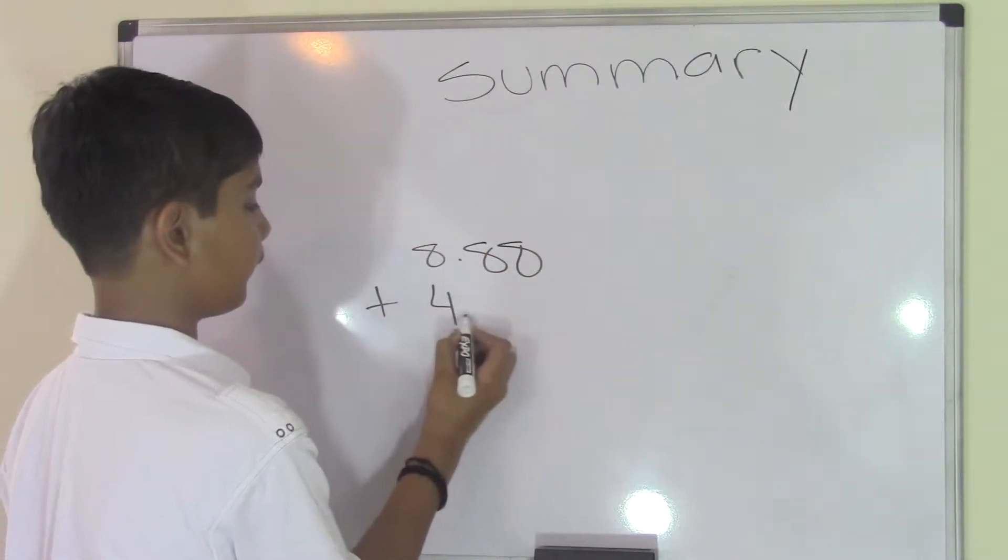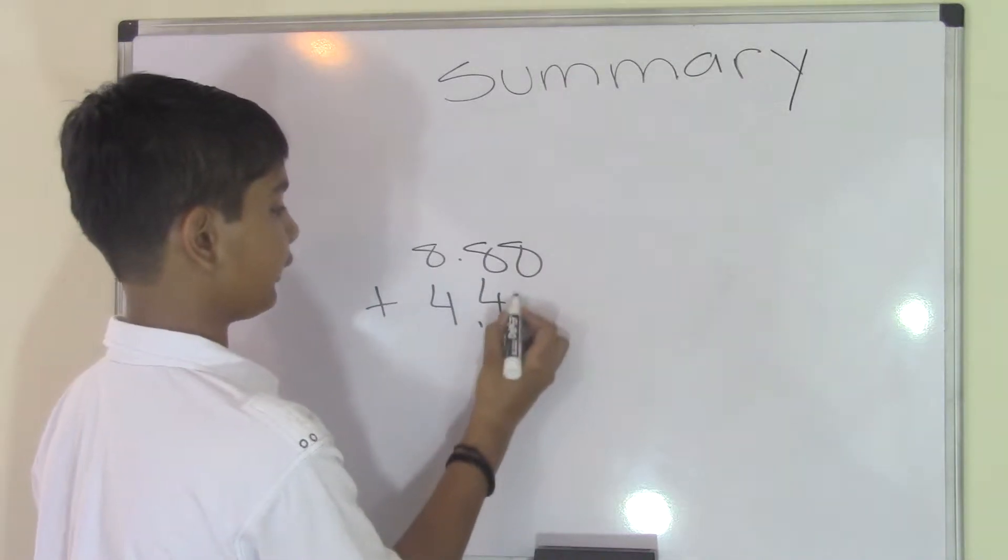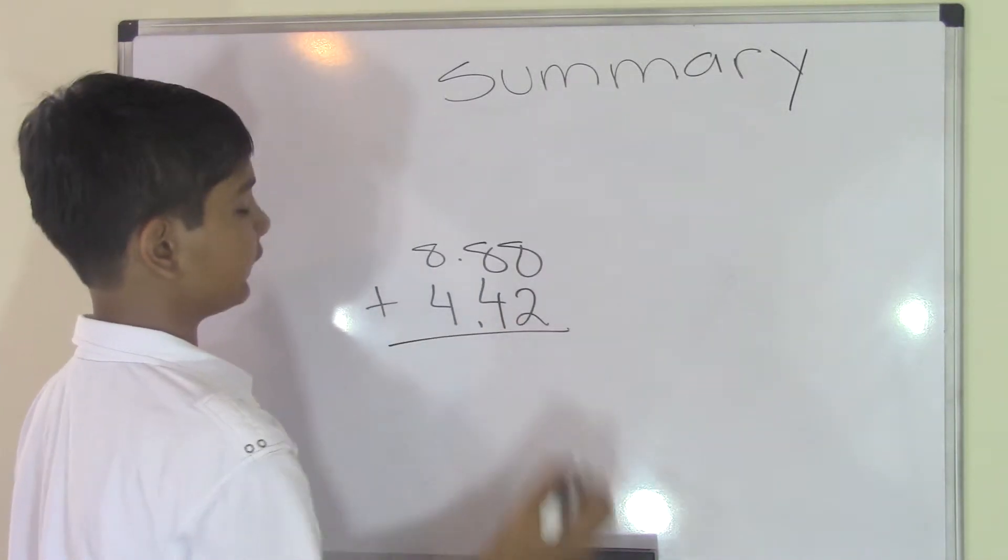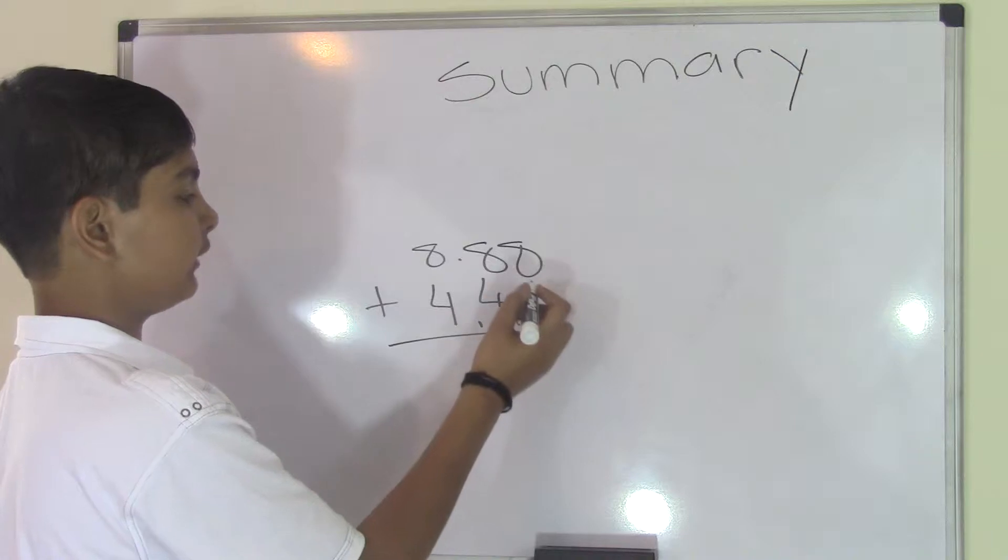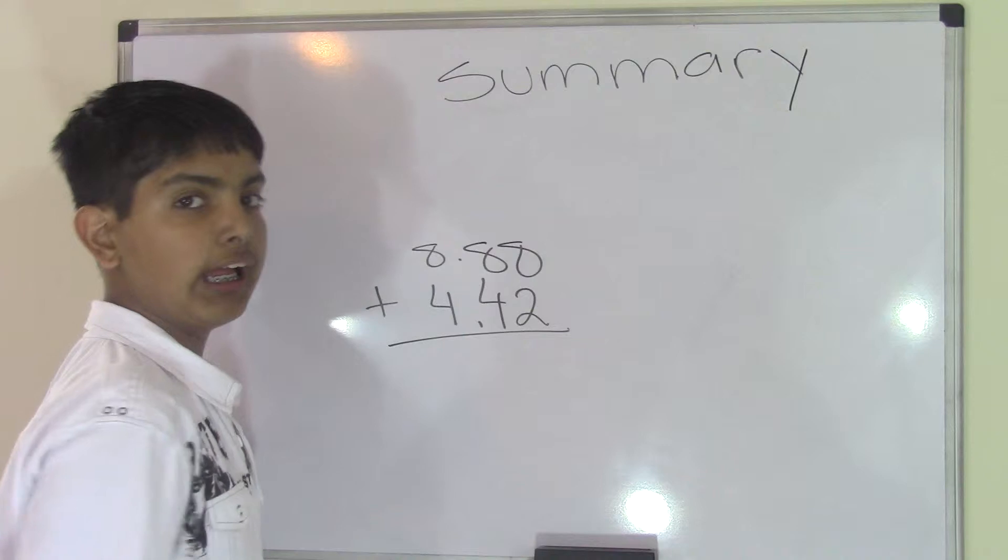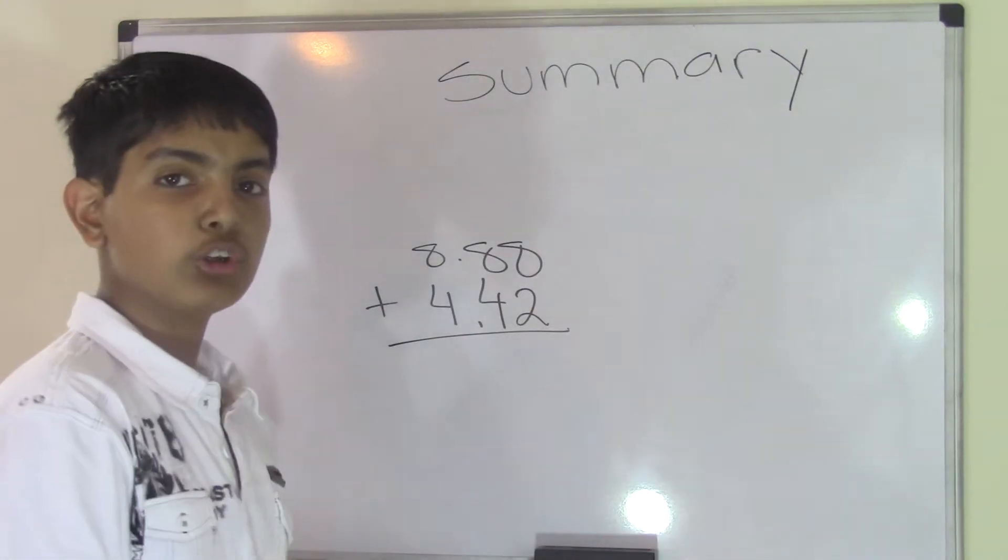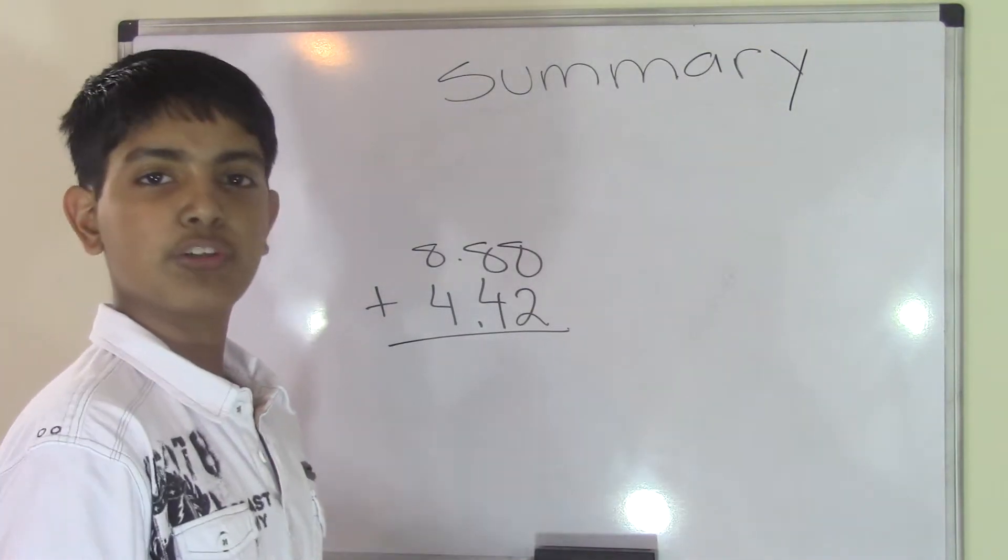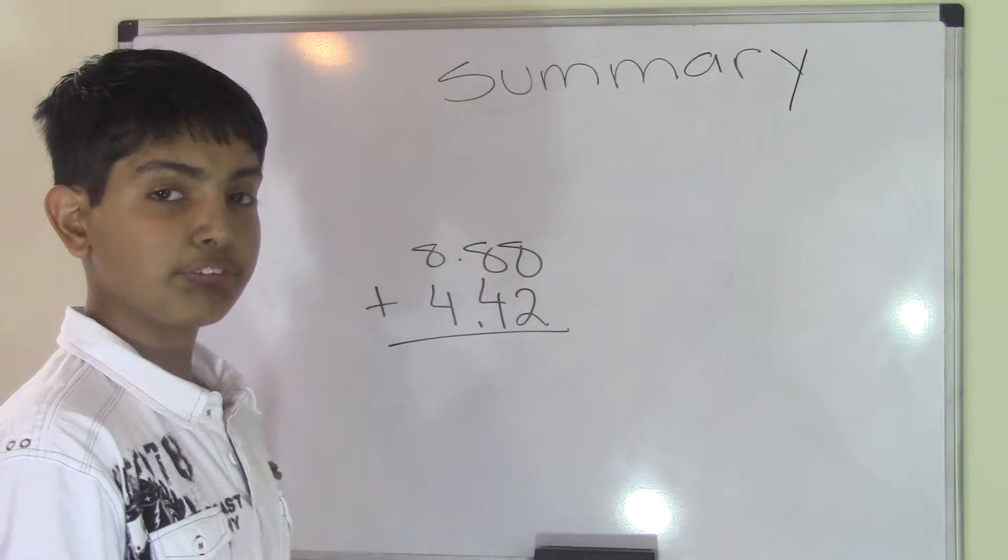To do this, first you have to estimate the two numbers. Look at the number after the decimal point and identify if it's greater than or less than 5, 50, or 500 depending on its place value.